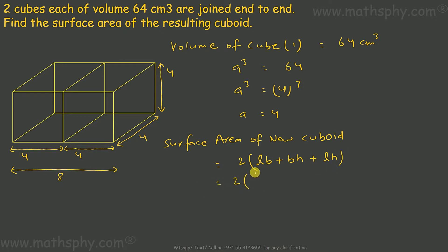Length is 8, breadth is 4, height is 4. Substituting into the formula: 8 times 4, 4 times 4, and 8 times 4. This gives me 32 plus 16 plus 32.